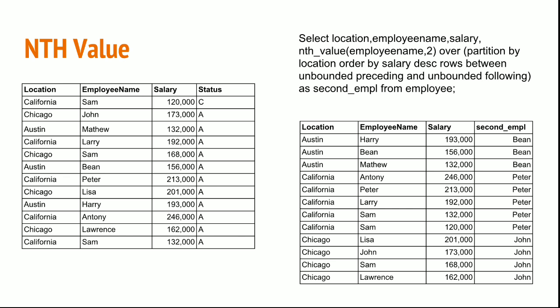The second employee for Austin is Bean, so his name has come up. You can try this function and keep the syntax handy because you will need to use this multiple times.